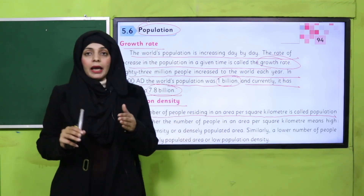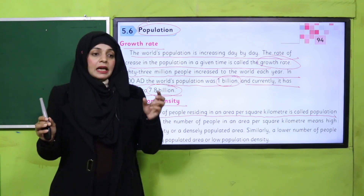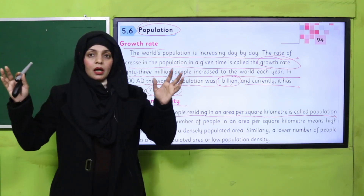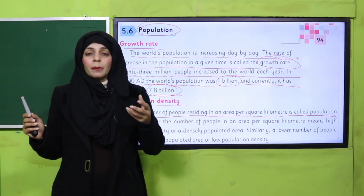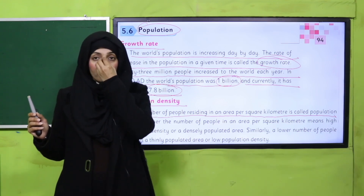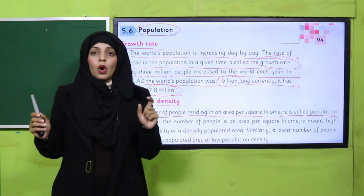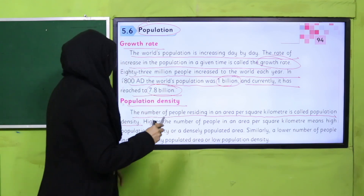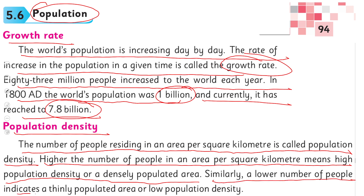Jo logon ki abadi ek square kilometer mein rah rahi hoti hai, that is called population density. For example, Pakistan ki abadi 22 crore hai — toh par square kilometer mein kitni abadi hogi, that is called the population density. Higher the number of people per square kilometer means high population density or densely populated area. Similarly, a lower number of people indicates a thinly populated area or low population density.